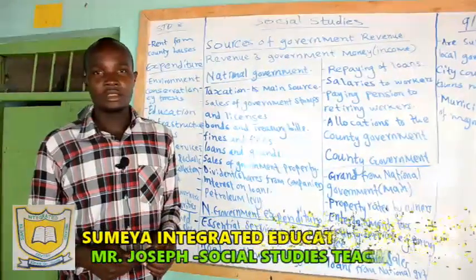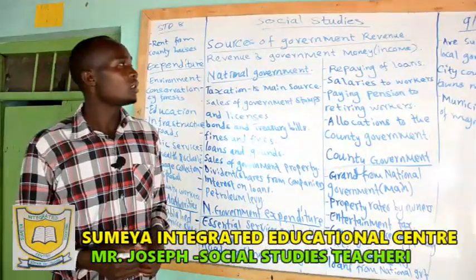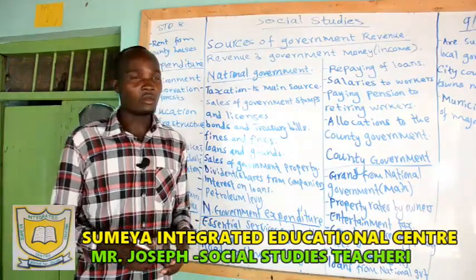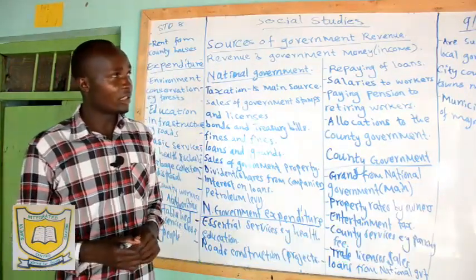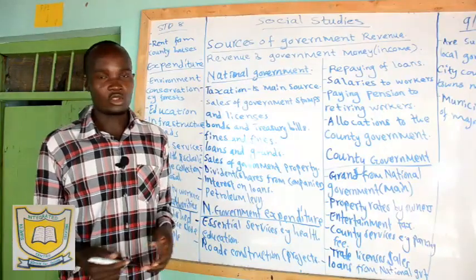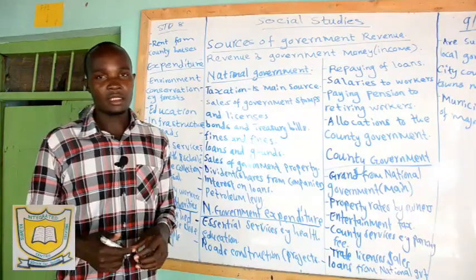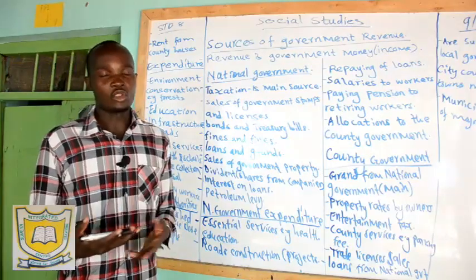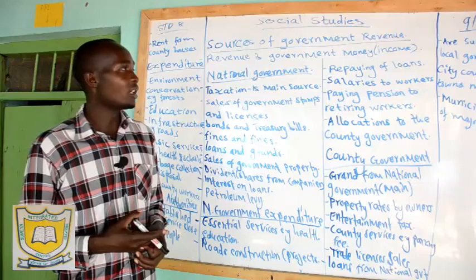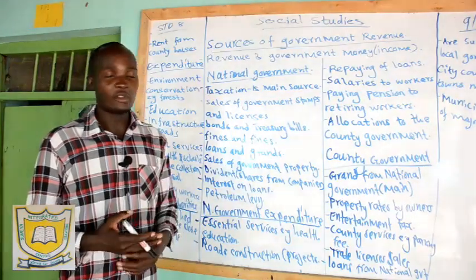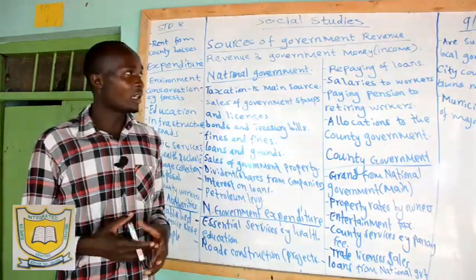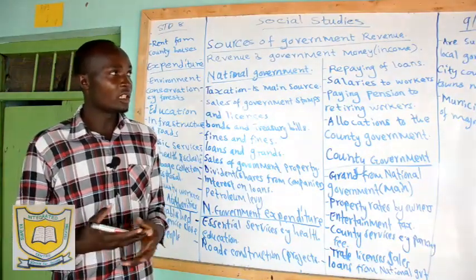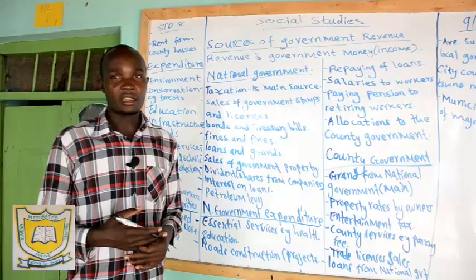Good morning everybody, welcome for a lesson today. We are going to talk about the source of government revenue. But before that, I think we looked at the different functions and arms of the government. We talked about the judiciary and the executive functions of the President of the Republic of Kenya. We also looked at the form of the judiciary and their work.